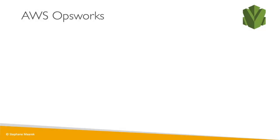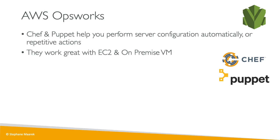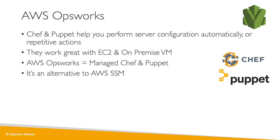A very quick lecture about OpsWorks. Chef and Puppet are two open source software that allow you to perform server configuration automatically or perform repetitive actions. They work amazingly with EC2 and on-premise VMs. In the AWS world, OpsWorks is Managed Chef and Puppet — it's just another name for Chef and Puppet, and it's kind of an alternative to AWS SSM.